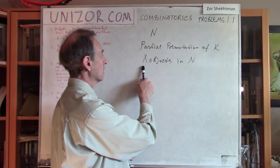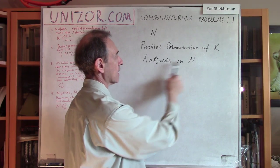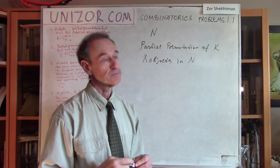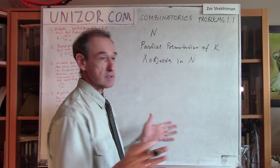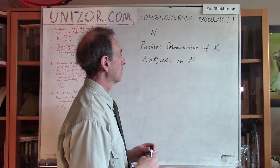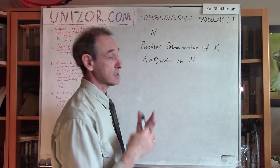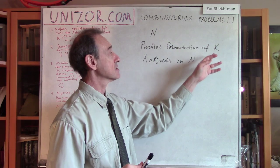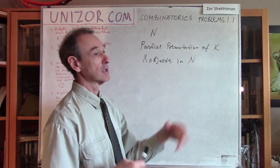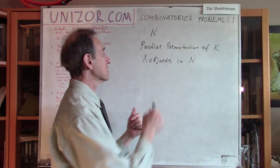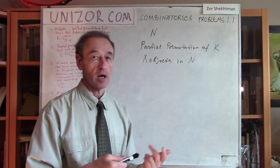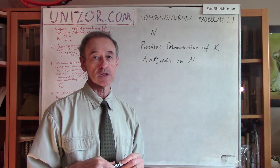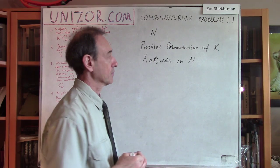So, always part of the K means that X is supposed to be less than or equal to K, of course. That's the condition of the problem. And the question is: how many different partial permutations of K objects out of N exist, with X marked objects from N always participating among these K?